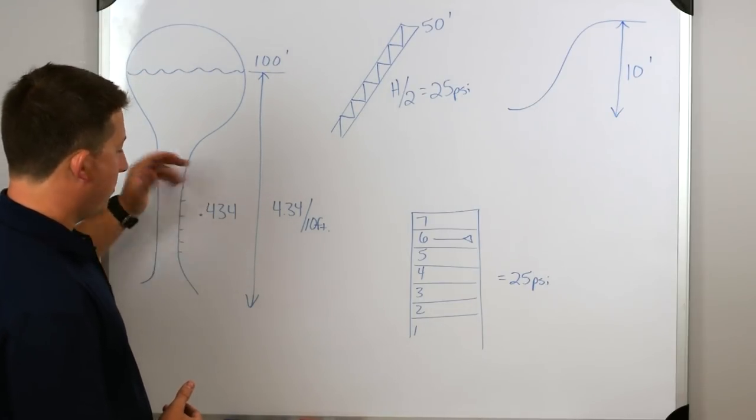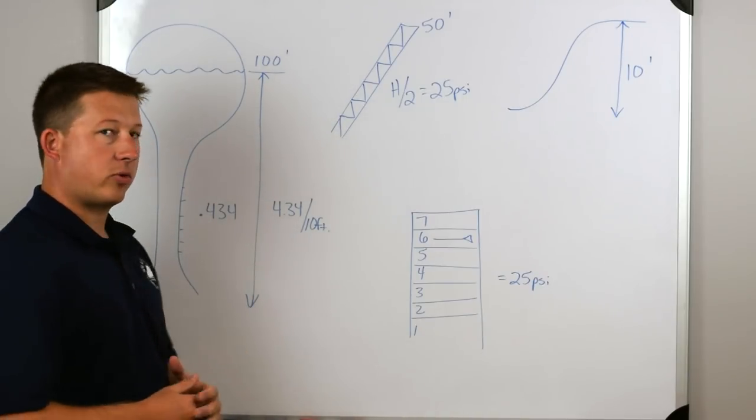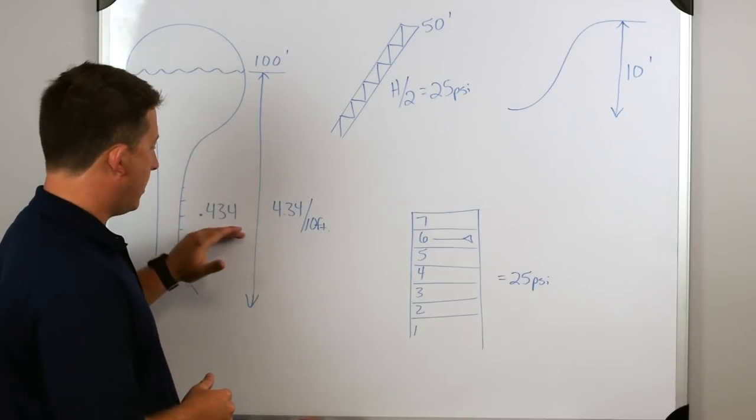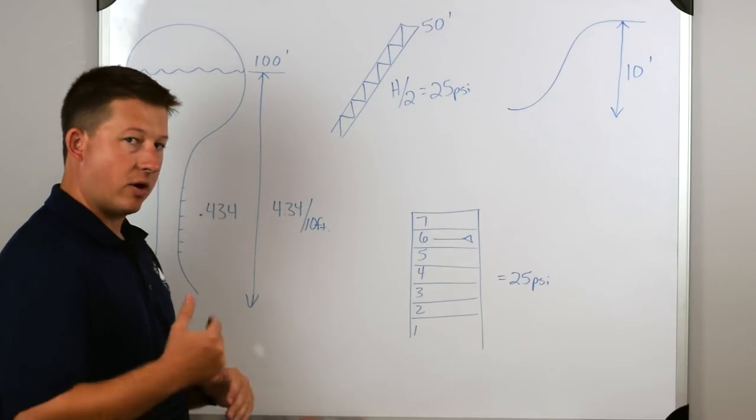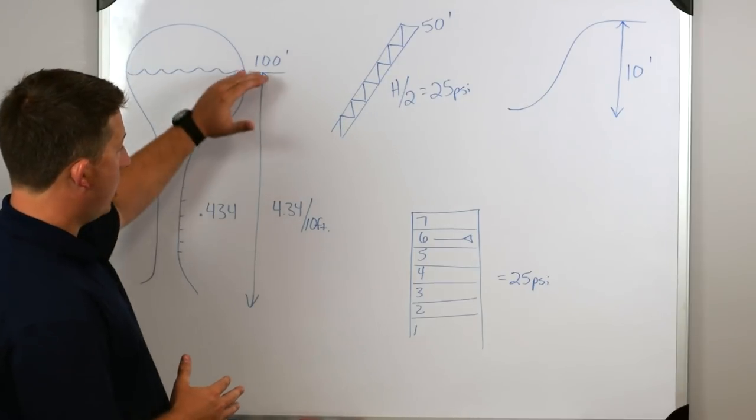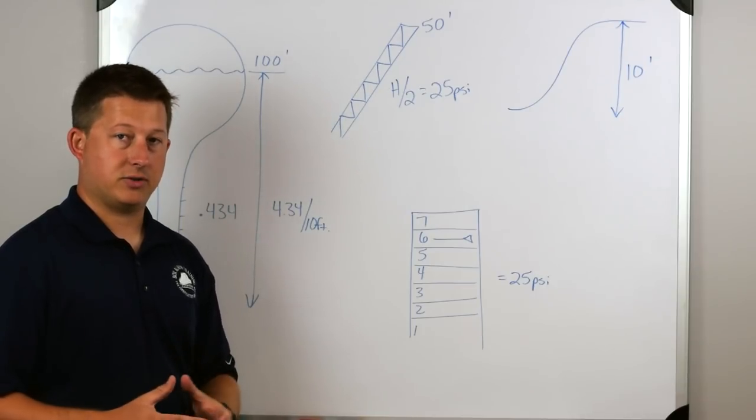The way that this works is for every one foot, a column of water that's one foot tall, you're going to generate 0.434 pounds of pressure, or PSI. So with that logic, for every 10 feet we gain 4.34 pounds of pressure. So at 100 feet in the air, we would have 43.4 PSI pounds of pressure.